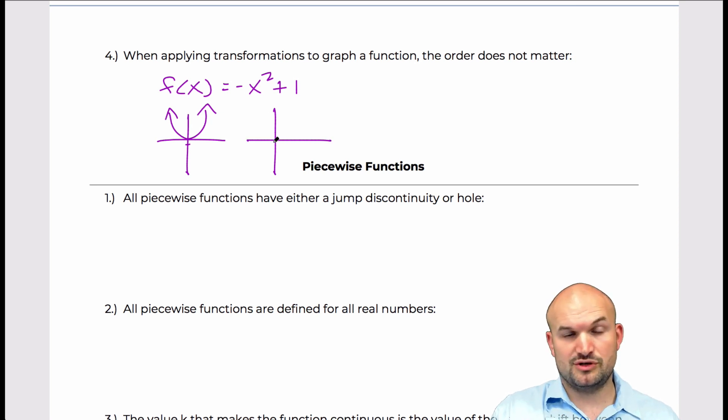So if you follow this rule here, if you reflect it first, so you reflect it down, right? And then you shift it up 1. So now the graph looks like this.